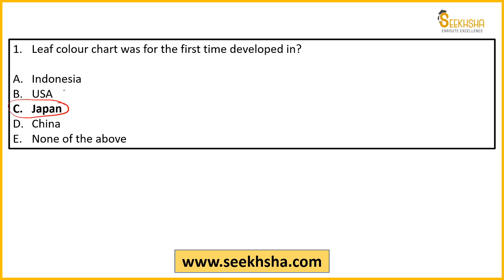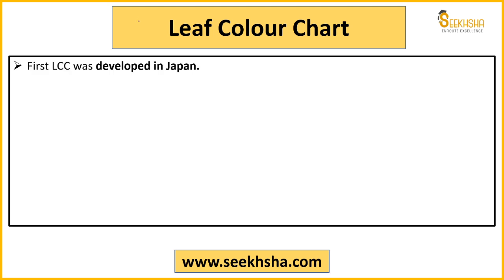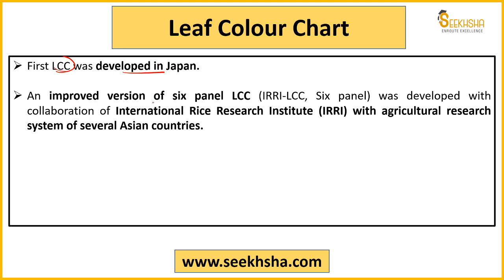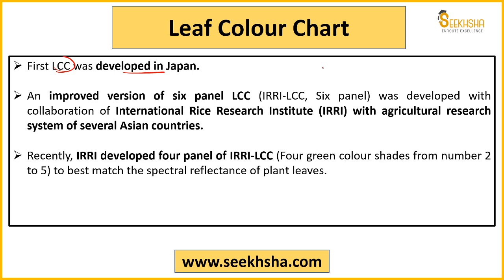The Leaf Color Chart is an important topic, so let's understand it in a bit of detail. The first LCC was developed in Japan. It had different versions — a six-panel LCC version came first, which was then improved. The International Rice Research Institute (IRRI) and Agriculture Research Institute worked on its improvement, bringing it from six panels to five, then four.